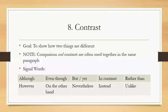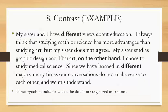Number eight: contrast. These are paragraphs or structures that show difference between two items. Signal words include: although, even though, but, yet, in contrast, rather than, however, on the other hand, nevertheless, instead, and unlike. Here's an example — you'll notice keywords like different, but, does not agree, and on the other hand — all signaling differences or contrast. Pause the video so you can read this paragraph and see a good example of a contrast structure.